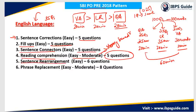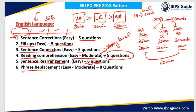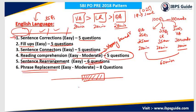There were also questions from sentence rearrangement, and the pattern followed was similar to that seen in SBI Clerk exam. There was a single sentence divided into different parts — the first part was fixed and we had to arrange the remaining parts to make a meaningful sentence. This was asked for a total of six questions. There were also questions from phrase replacement — a single sentence where one part is in bold, and you have to determine the meaning of the bold part and choose accordingly, for a total of eight questions. This is the total breakup for one of the slots.